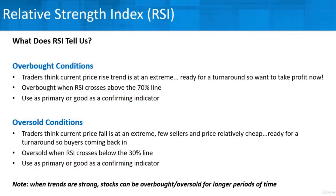What RSI is really telling us is about overbought and oversold conditions — that's the big thing. An overbought condition means traders think the current price rise trend is at an extreme. Prices have gone up to the top, and traders are starting to think it's settling down. There may be fewer people coming in to buy. It seems overbought, so we might be ready for a turnaround where prices start falling. We might want to take our profits now. It's hard to predict the actual peak, but the idea is to get as close as you can.